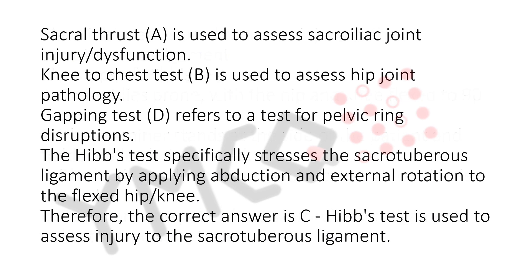Sacral thrust (A) is used to assess sacroiliac joint injury and dysfunction. Knee to chest test (B) is used to assess hip joint pathology. Gapping test (D) refers to a test for pelvic ring disruptions.